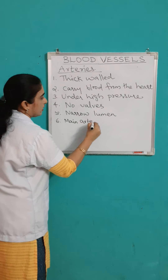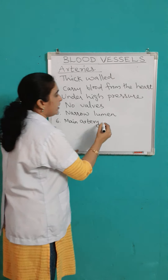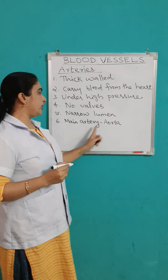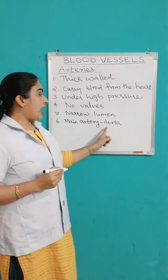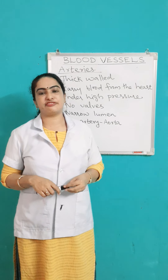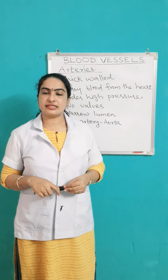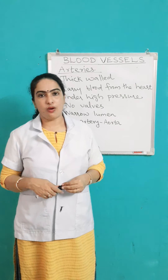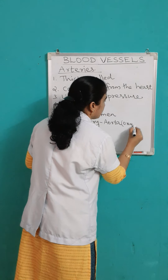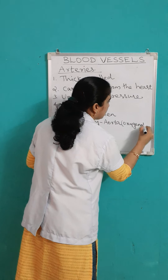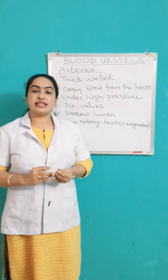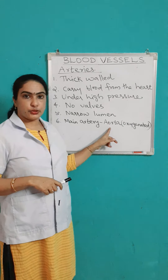There is a main artery which is known as the aorta. So aorta is the name of the main artery. These arteries always carry oxygenated blood from the heart. Oxygenated blood means the blood which contains oxygen, and that blood is called oxygenated blood. So arteries always carry oxygenated blood.